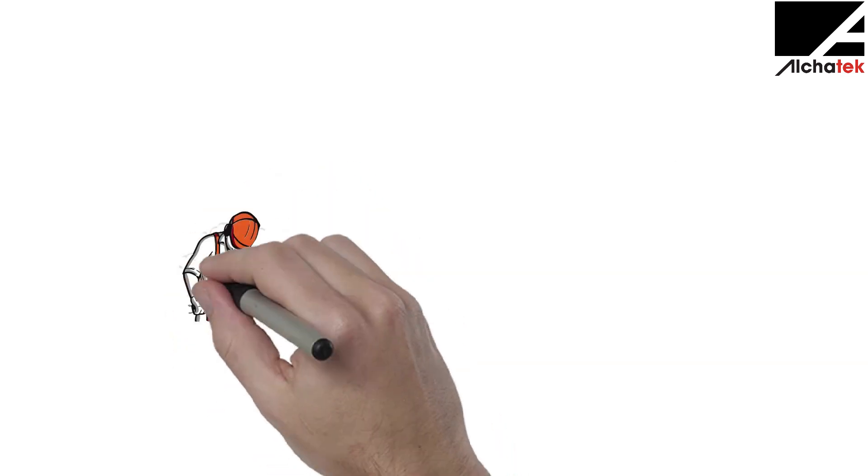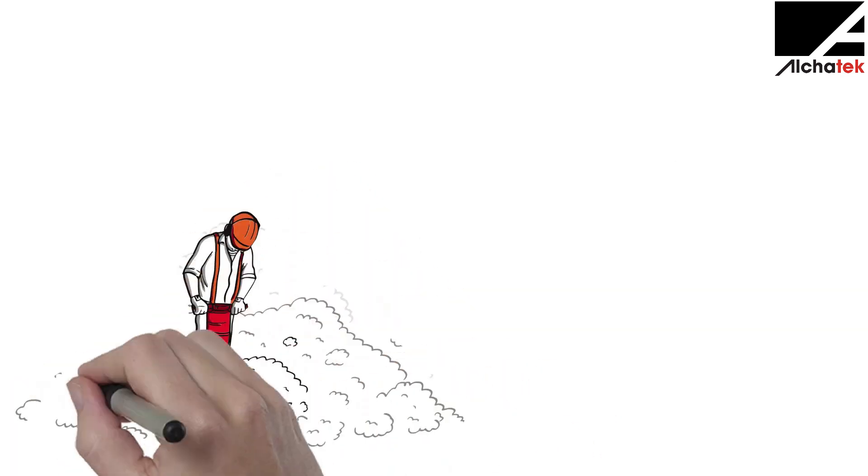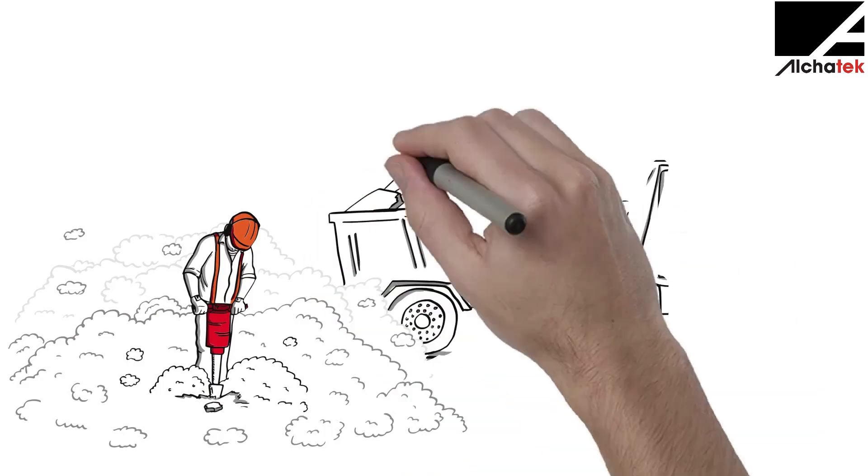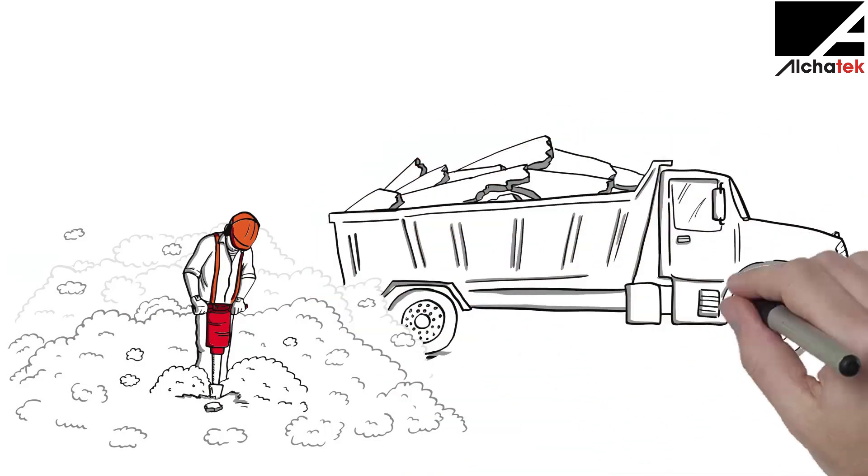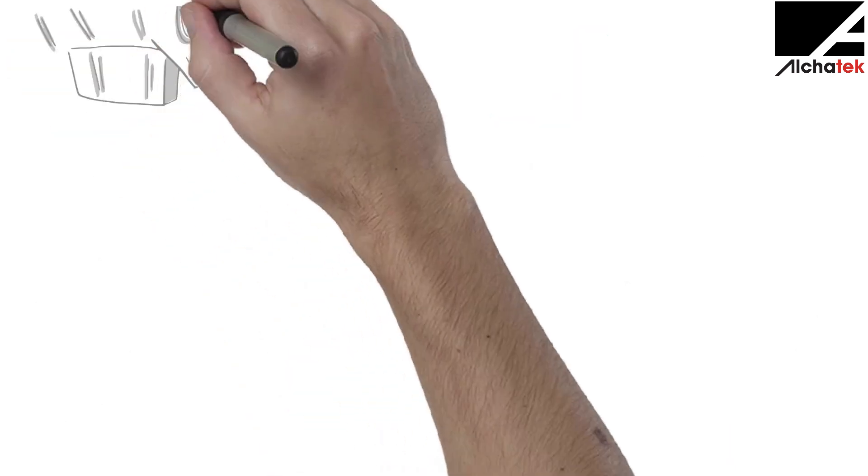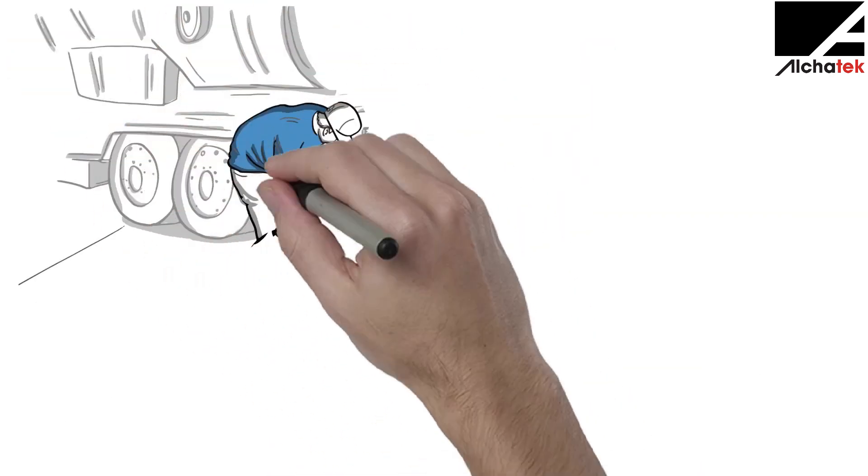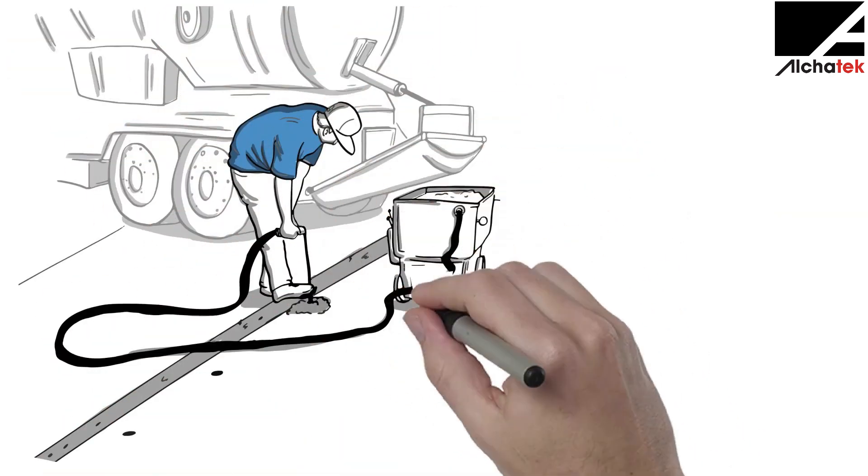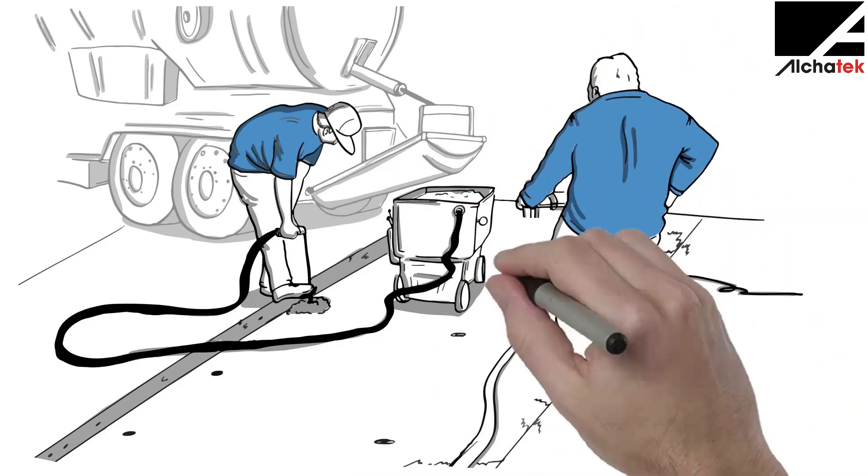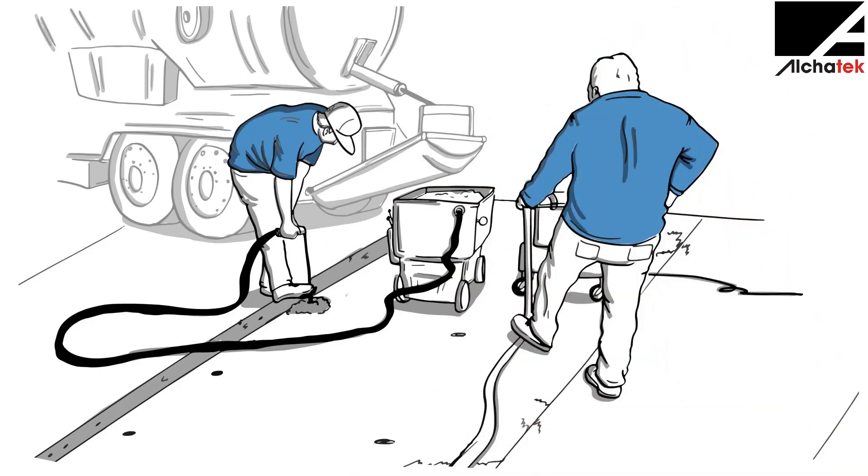There are a few options when it comes to repairing settled concrete. You can rip out the whole thing and replace it, but that's messy, expensive, and not very environmentally friendly. You can fill the void space with cement grout, thereby lifting the original slab back up to its original position. It's called mud jacking.